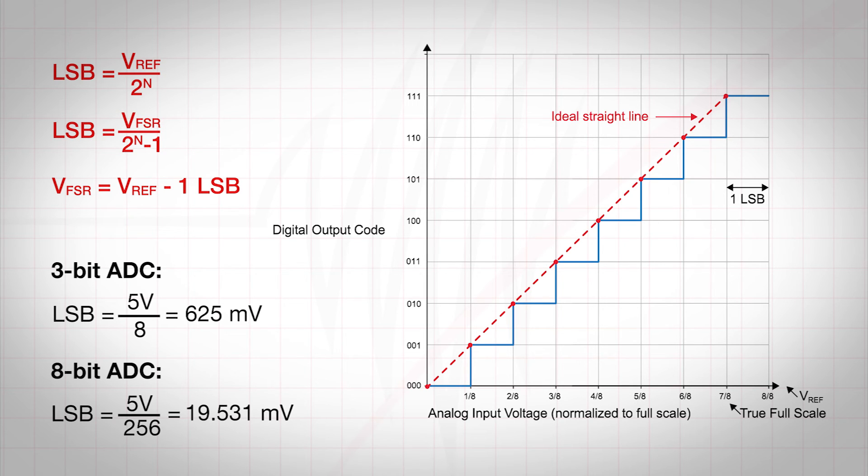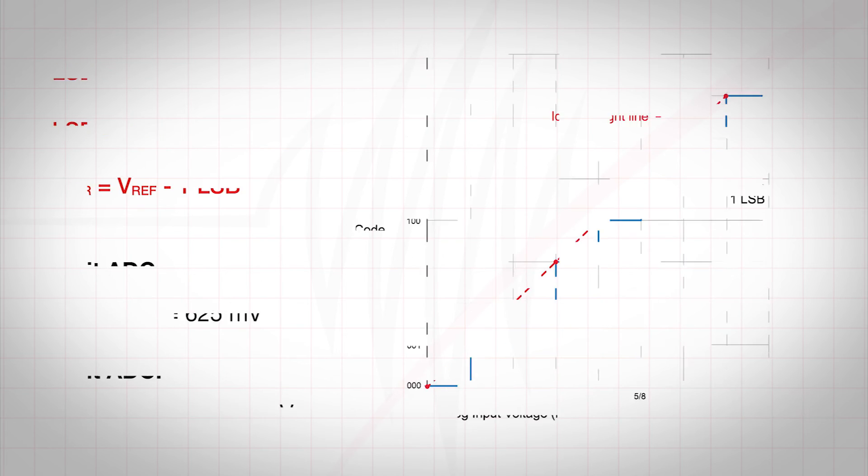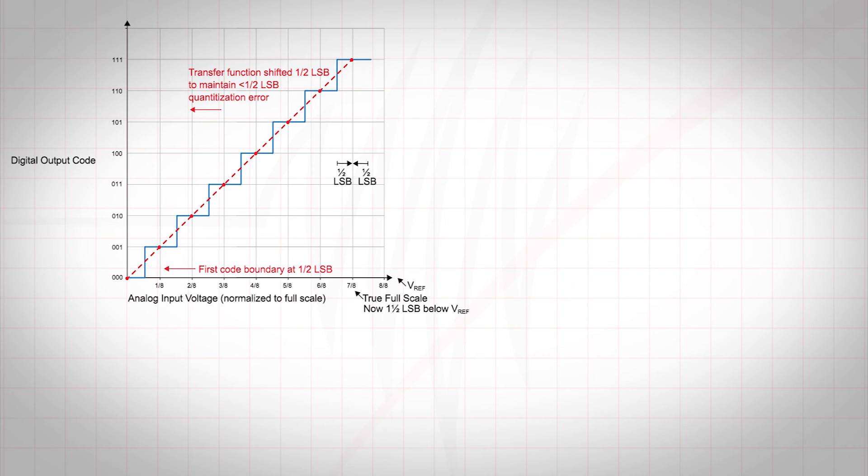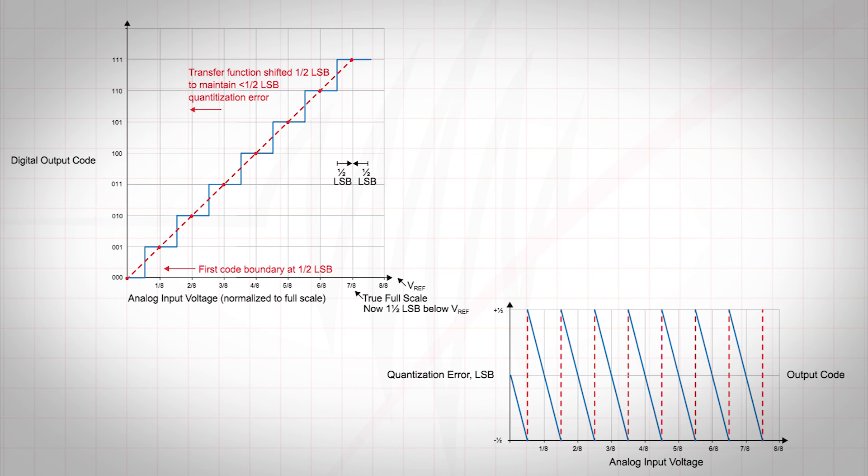The smaller the LSB, the smaller this error will be, and the closer we get to the ideal straight line. Additionally, ADC manufacturers will also introduce a negative half LSB offset to shift the transfer function to the left and shift the quantization error from a range of negative 1 to 0 LSB to negative 1 half to positive 1 half an LSB, thus minimizing the maximum absolute quantization error to half an LSB.